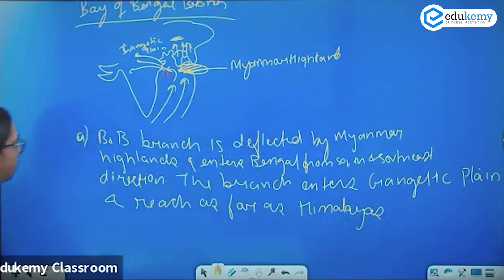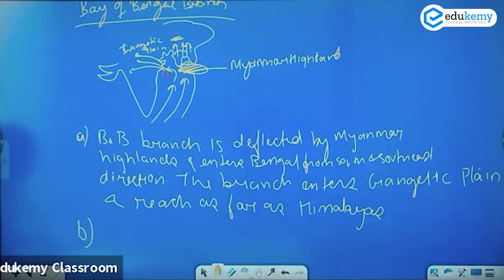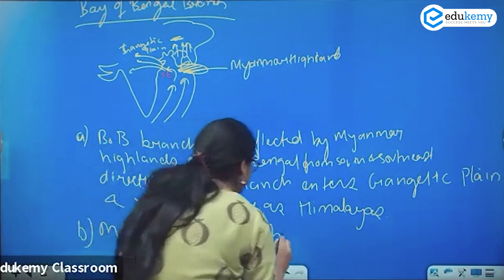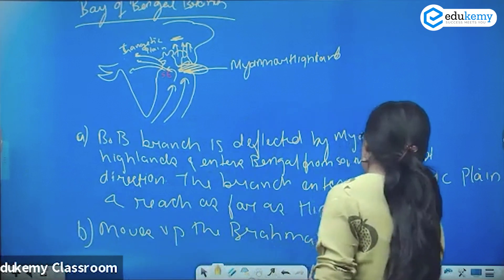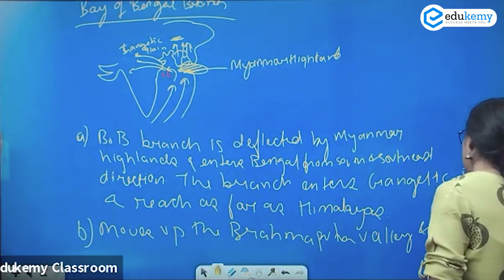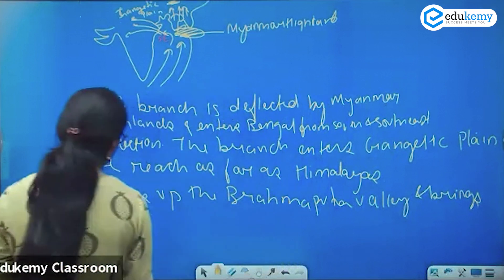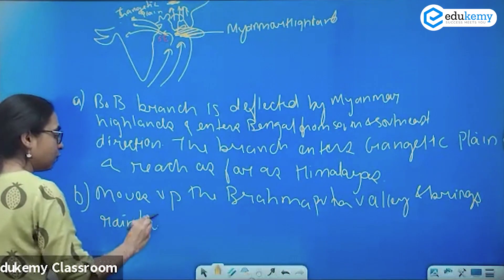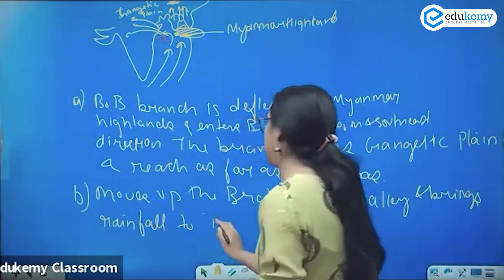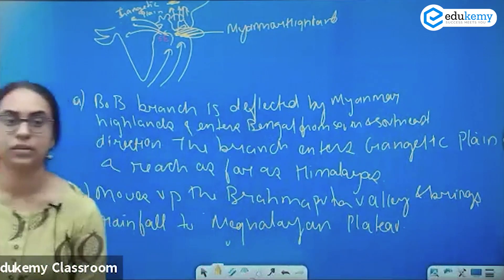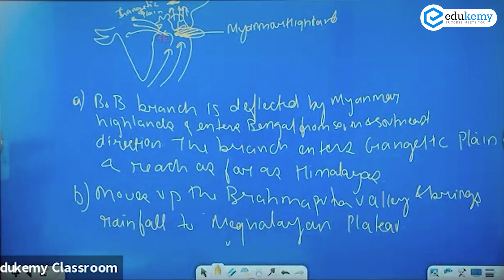The second sub-branch of the Bay of Bengal branch moves up the Brahmaputra valley and brings rainfall to the Meghalayan plateau. So there are two branches: one is the Gangetic branch and the other is the Meghalayan branch.